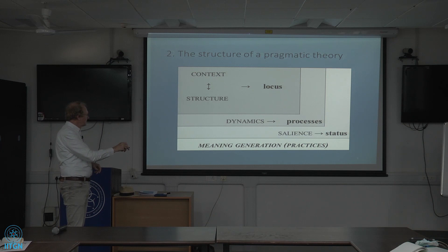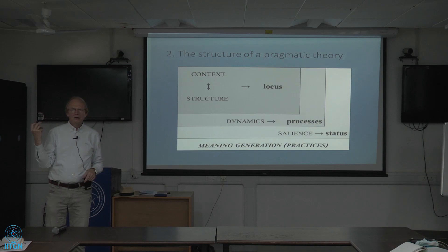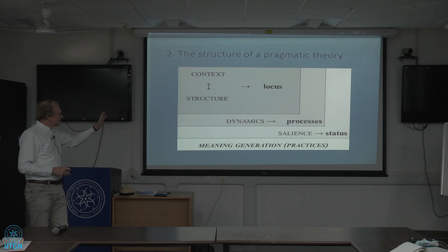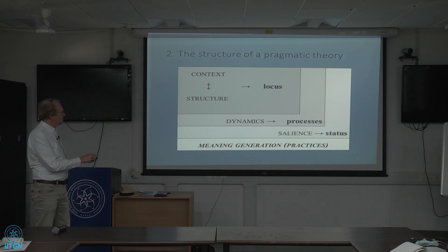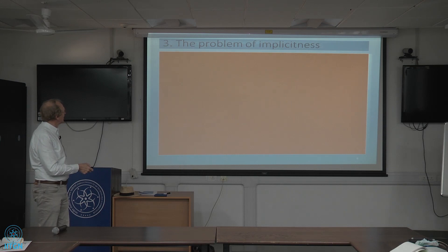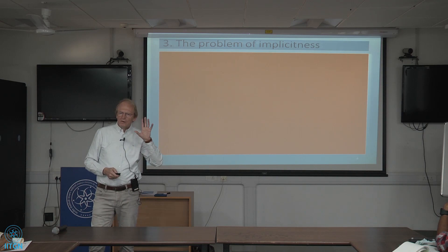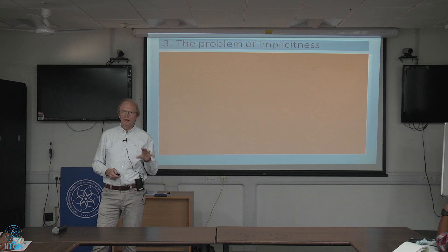Context and structure are very important, and then there is what I call salience — the status of all those processes in relation to the human mind — which is what I refer to when I mention reflexivity and metapragmatic awareness. Now let's get to the problem of implicitness, because what I just said about needing to make hypotheses about what is happening in your minds is very directly related to the position that implicit meaning takes in language use.